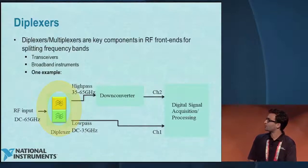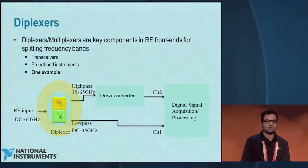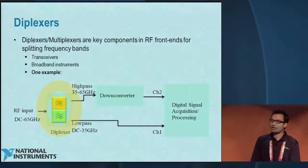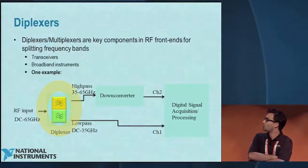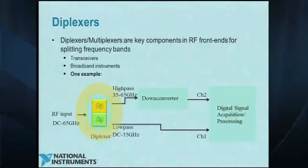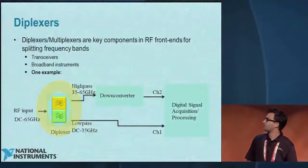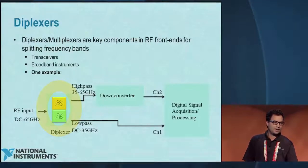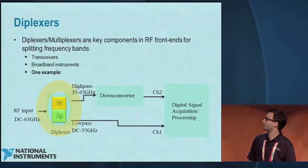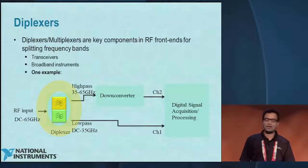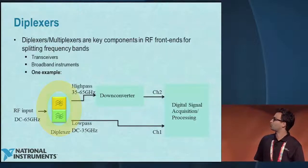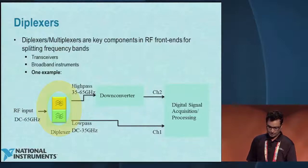Diplexers and multiplexers are key components in the front end of broadband instruments. One example is a real-time oscilloscope. For a real-time oscilloscope, we have an RF input — say DC to 65 gigahertz — and the diplexer splits it into DC to 35 and 35 to 65 gigahertz. We down-convert and bring it back to DC to 30 gigahertz, then apply digital signal processing in the back end to show the signal real-time from DC to 67 gigahertz.